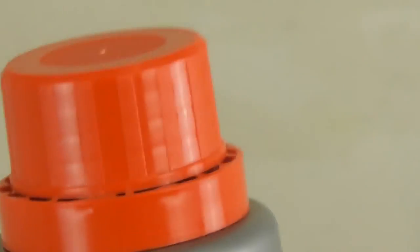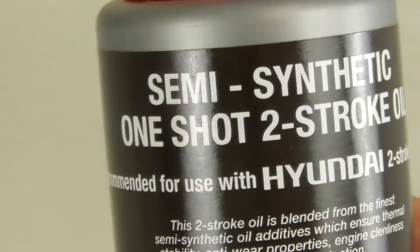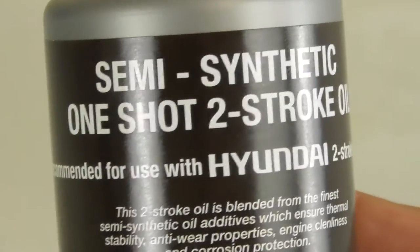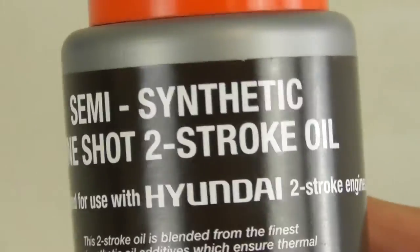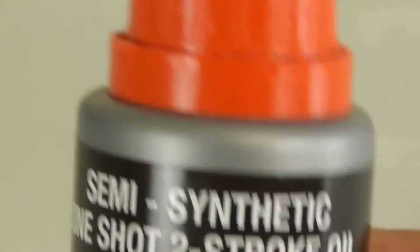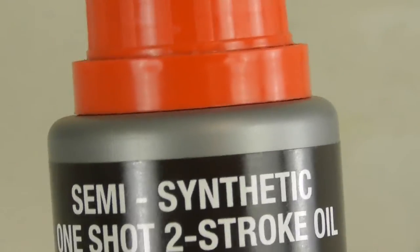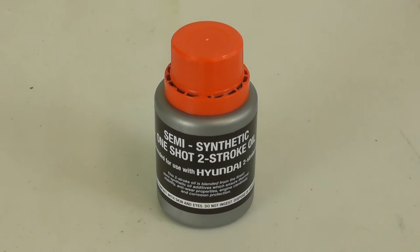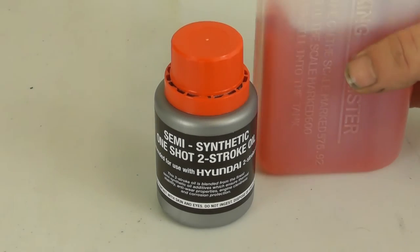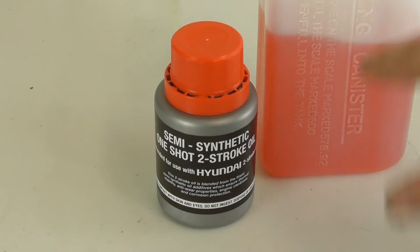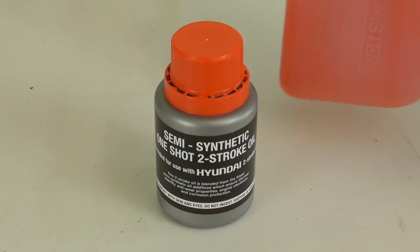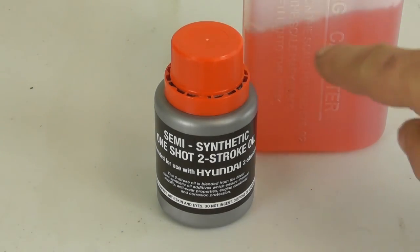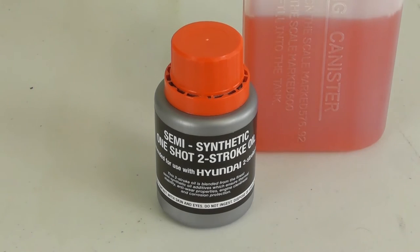What we use is this semi-synthetic one-shot two-stroke oil, specially recommended for use with Hyundai two-stroke engines. These bottles are readily available from our parts department. I'm not going to go pouring petrol in a studio environment, but I do have a half a bottle that I've mixed earlier. Once you've mixed it up, give it a good shake to mix the two-stroke oil completely in with the petrol, and that's ready to use.